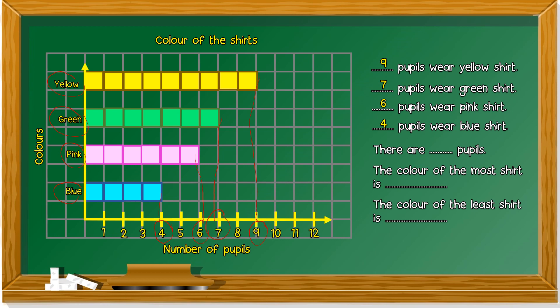So how many pupils are there? 9 plus 7. 16. Plus 6. 16 put in your mouth. Open 6 fingers. 17, 18, 19, 20, 21, 22. 22 plus 4 is 26. So there are 26 pupils.